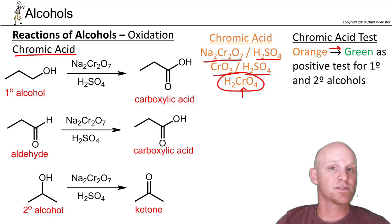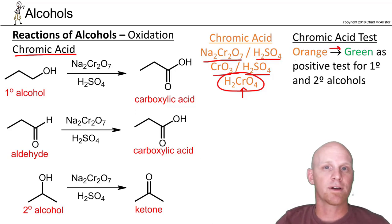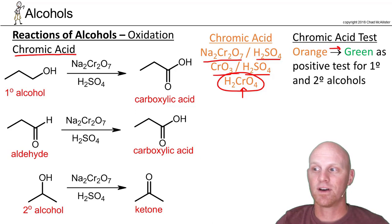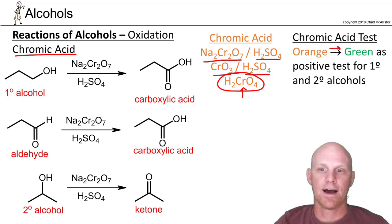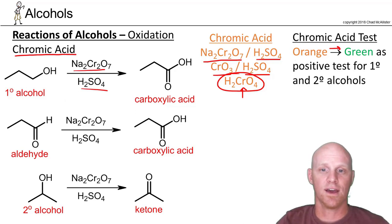Chromic acid goes from the +6 oxidation state down to the +3 oxidation state — orange in the +6, green in the +3. This is a great test: if you think you have an alcohol and you add chromic acid and the solution turns green, you probably have a primary or secondary alcohol. If it doesn't turn green, you don't have a primary or secondary alcohol — you might have a tertiary alcohol. That's the chromic acid test. It also gives a positive test for aldehydes, so you can't completely rule that out. The most common way of writing this reagent is sodium dichromate with sulfuric acid.